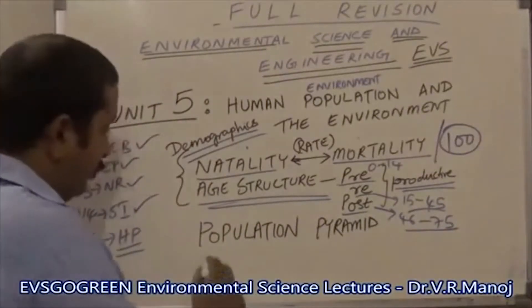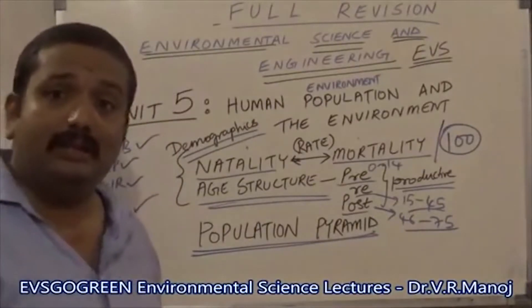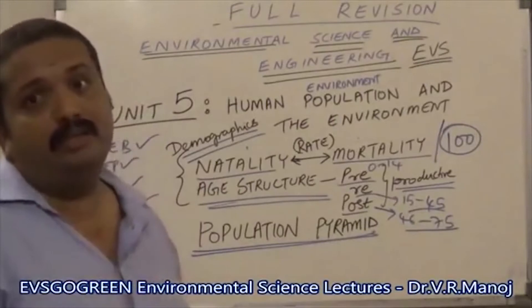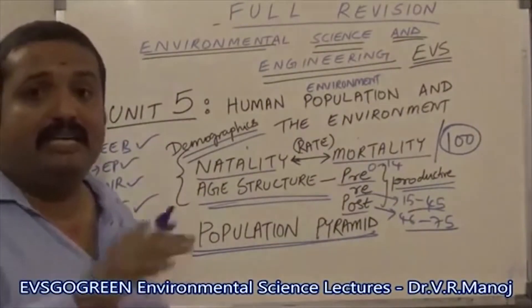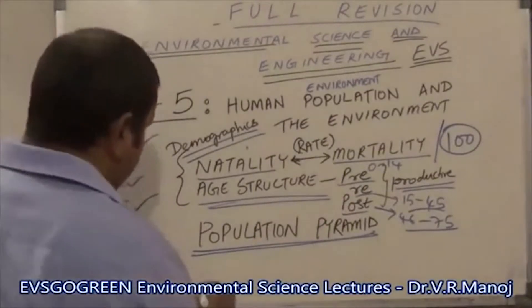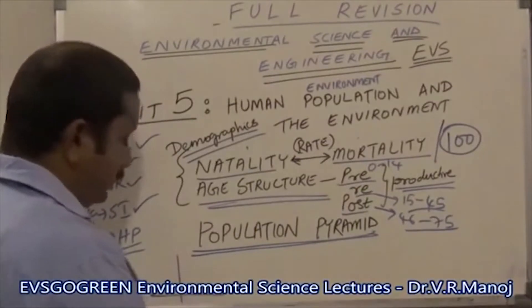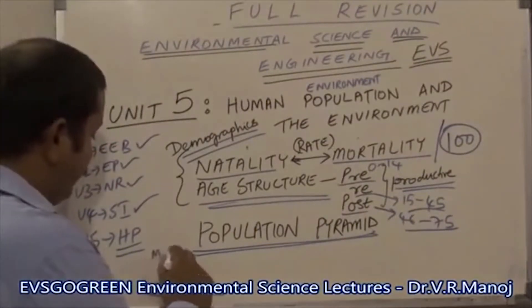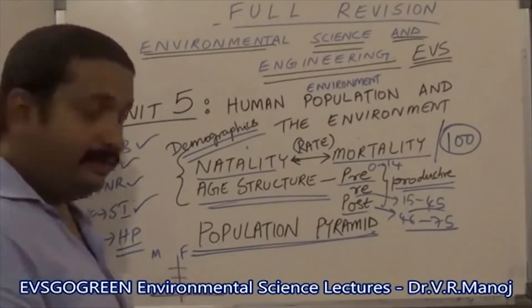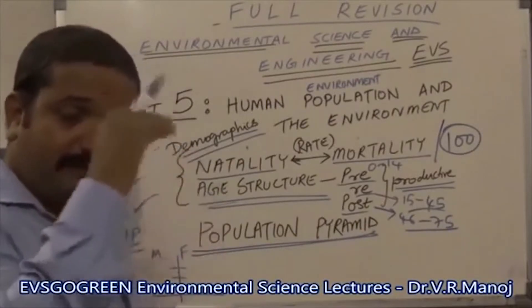Based on this age structure, if you define it as a graphical representation, you will end up with what is called a Population Pyramid, which gives you an instant look into the status of the population and where it is going after a period of 10 or 15 years. The population pyramid has the male and female sides, with divisions from 0 to 5 to 10 in 5-year intervals till the average life expectancy.